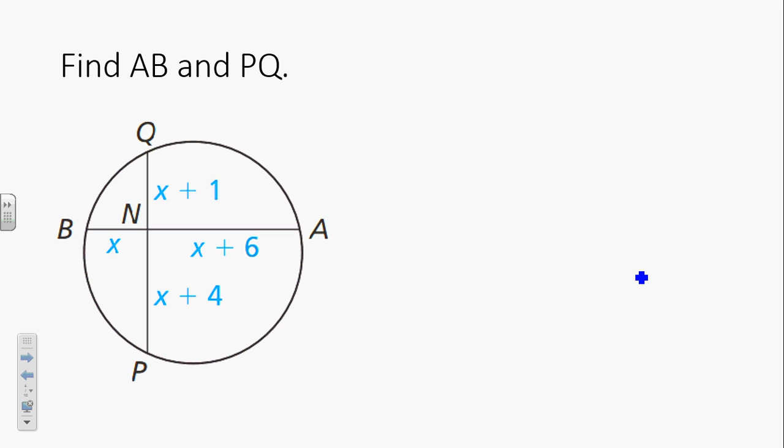If we want the distance between A and B and the distance between P and Q, and we notice that these are segments of chords, then what are we going to multiply together to solve it? We want to find the distance between these two guys, so once we figure out what X is, we need to plug X back in and add them together. So do we want to start with our vertical segment or our horizontal segment? Vertical. So if we're starting with vertical, that means that we're going to take the X plus 1 times the X plus 4. And that will be equal to X times the X plus 6.